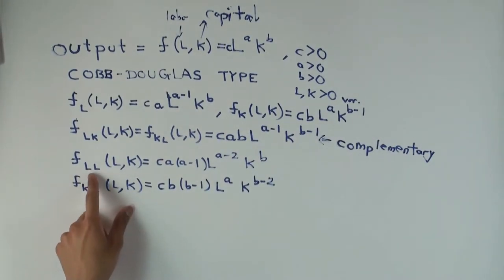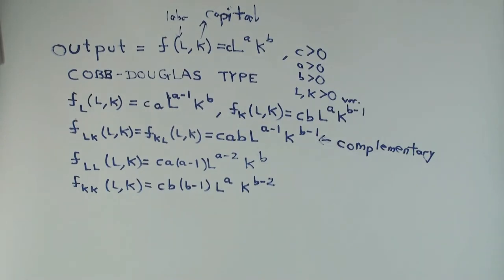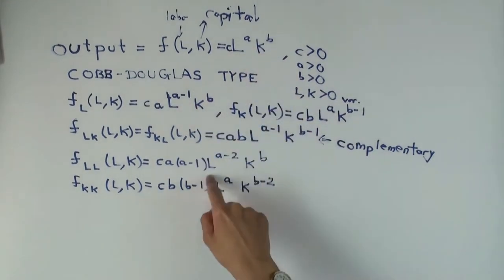Effectively, what we're saying is that labor and capital are complementary. In a Cobb-Douglas situation, you always have labor and capital are complementary. In a multiplicatively separable situation, each one is multiplying on the other, and because the coefficients are positive, that's complementary. That's the first interesting, well, the second, if you say the marginal product is positive, it's interesting, but that's sort of predictable.